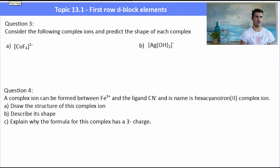Question three, consider the following complex ions and predict the shape. So here we have CuF4 2-. Well, that's going to be tetrahedral or it could possibly be square planar. Not too sure. Silver hydroxide with the minus charge. Well, it's got two ligands. It will be negatively charged.